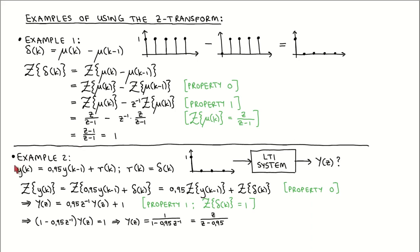For the second example, we consider a system described by a difference equation where an impulse is applied to the input. We want to calculate the Z-Transform of the impulse response of the system. To solve this, we apply the Z-Transform to both sides of the difference equation and substitute delta of K for r of K. Using property 0, the left-hand side is simply Y of Z. We use property 1 to write the first term on the right-hand side as 0.95 times Z to the power minus 1 times Y of Z, and the Z-Transform of the impulse as 1. Gathering terms with Y of Z on the left-hand side, we get Y of Z equal to Z divided by Z minus 0.95.